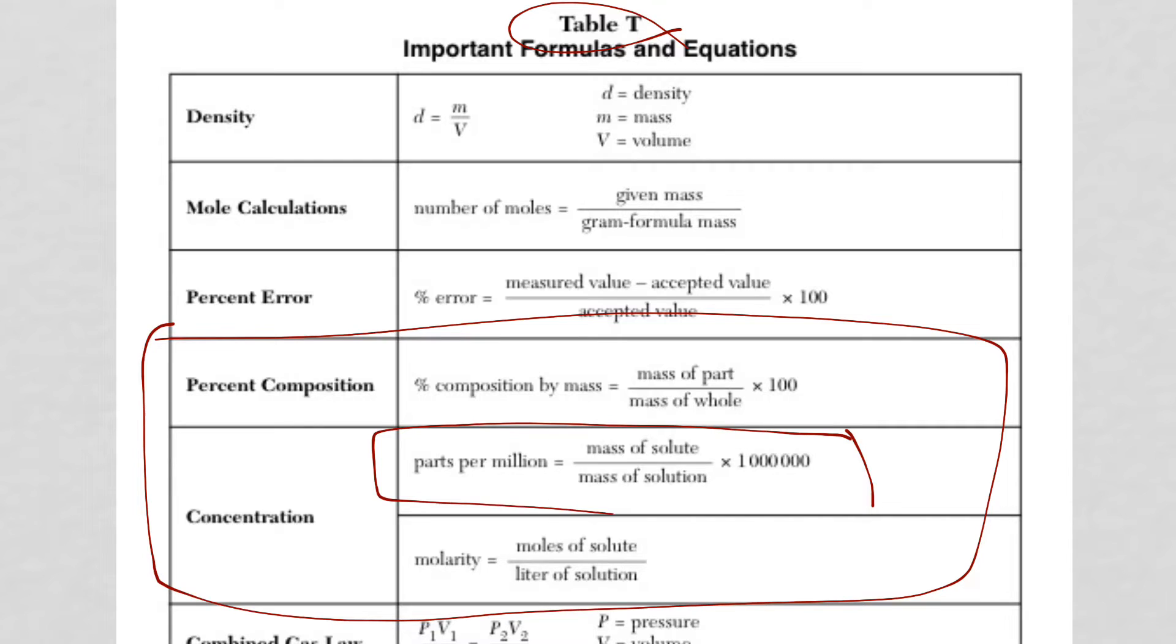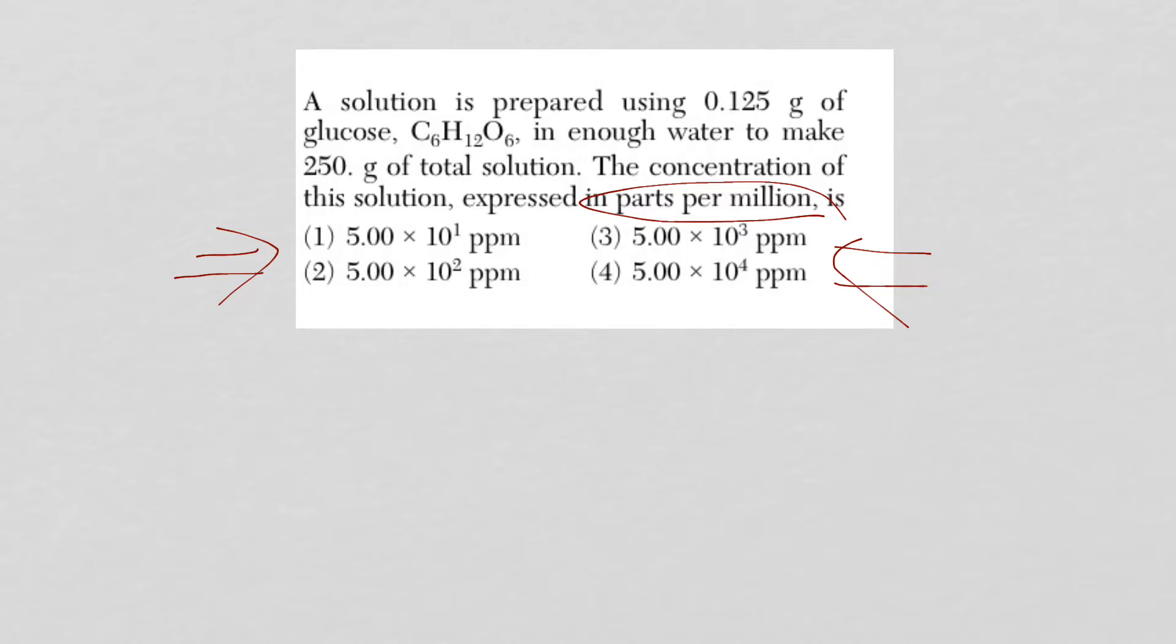Parts per million. Here it is. It's going to be the mass of the solute divided by the mass of solution. That's the whole thing. So it's still part over whole, but now we're going to multiply by a million. So parts per million, PPM is short for parts per million. It's going to be the mass of the solute over the mass of solution times one million.